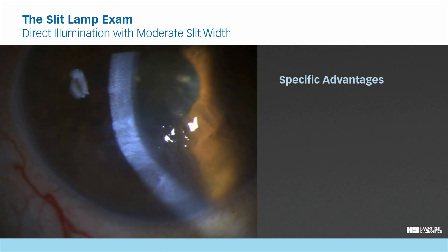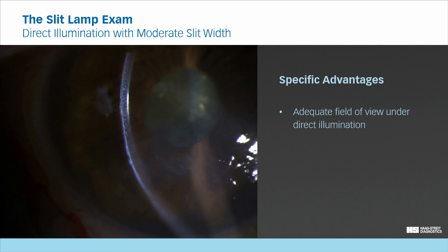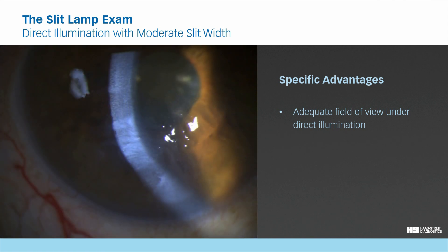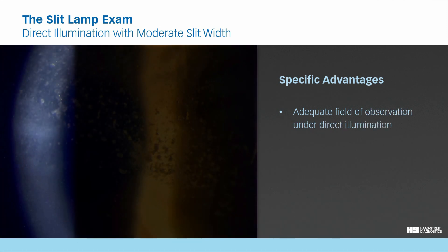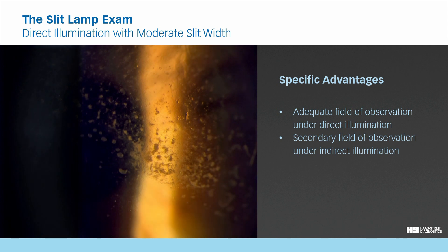Specific advantages. The moderate slit width provides an adequate field of view by maintaining the high contrast of the direct illumination. Thus, when comparing with the optical section, it shows a much larger portion of the corneal surface, which reduces the risk of missing subtle changes to the tissue. Beyond that, the areas just next to the directly illuminated field can be observed under indirect illumination. This secondary field of observation can provide a different view and level of illumination of the structure to aid in differentiation of lesions.